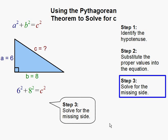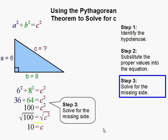Step 3: Solve for the missing side. In order to solve for c, we first have to simplify our equation. 6 squared is 36, 8 squared is 64. 36 plus 64 equals 100, which equals c squared. Now, in order to get just c, we have to take the square root of both sides, because the square root of c squared is just c, and the square root of 100 is 10. Therefore, the missing side that we're looking for is equal to 10. And that completes our problem.